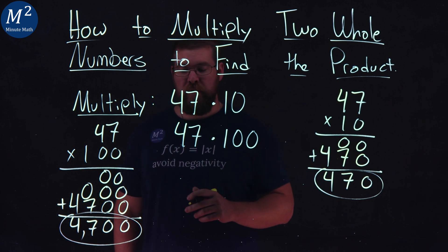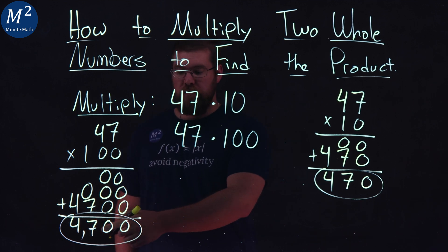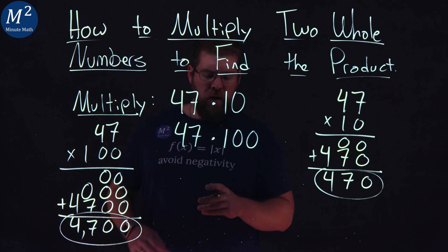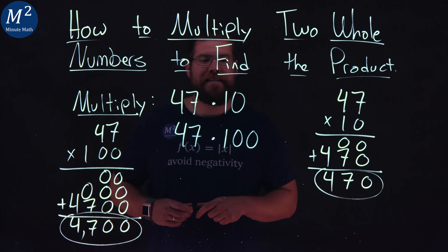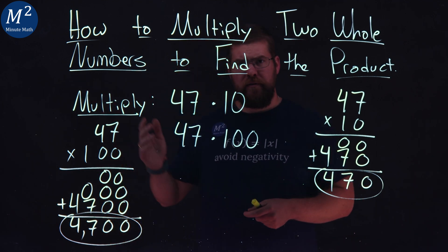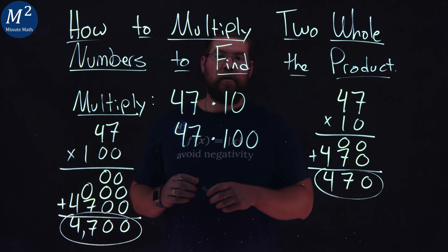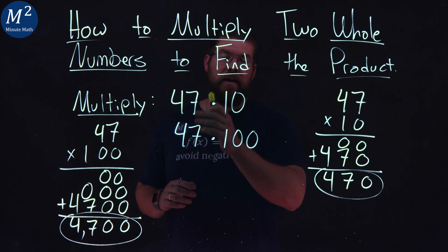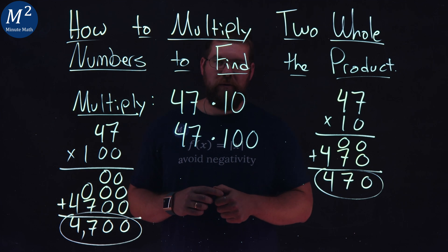47 with two zeros right there. So that's a good technique in the future. As you see tens and hundreds, thousands, millions, when it's just ending in zeros, you just add that many zeros to the end of the number, and you have the new multiplication value.